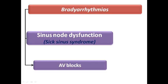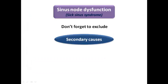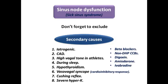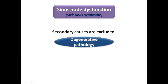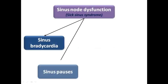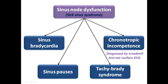Sinus node dysfunction is one of the main types of parrhythmia. Its other name is sick sinus syndrome, though sinus node dysfunction is the more preferred term. Regarding etiology, remember to exclude secondary causes first, such as iatrogenic causes, coronary artery disease, high vagal tone in athletes during sleep, hypothyroidism, vasovagal syncope, Cushing reflex, or severe hyperkalemia. If all secondary causes are excluded, sinus node dysfunction is diagnosed as degenerative pathology, the most common cause. We cover four clinical presentations: sinus bradycardia, sinus pause, tachy-brady syndrome, and chronotropic incompetence.